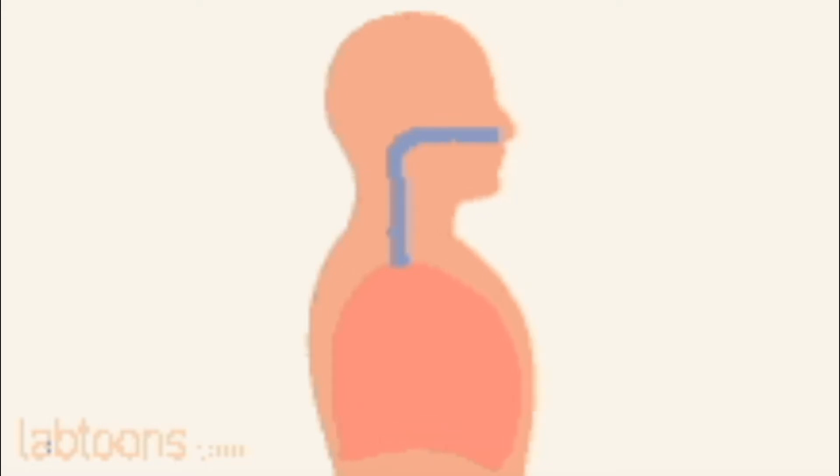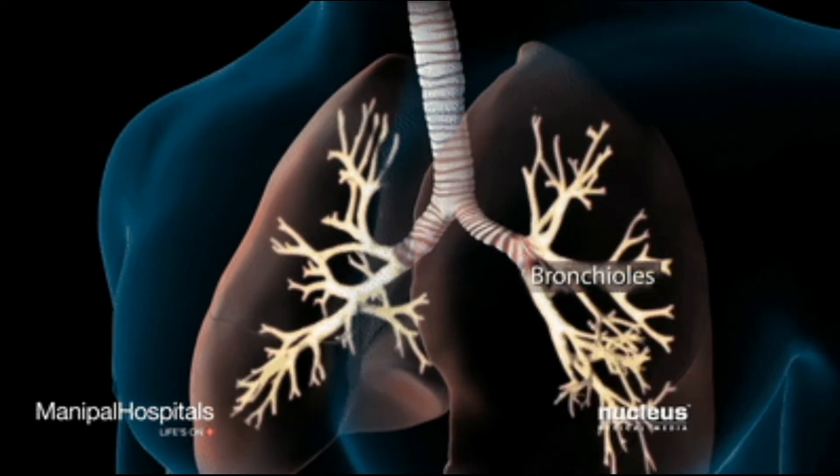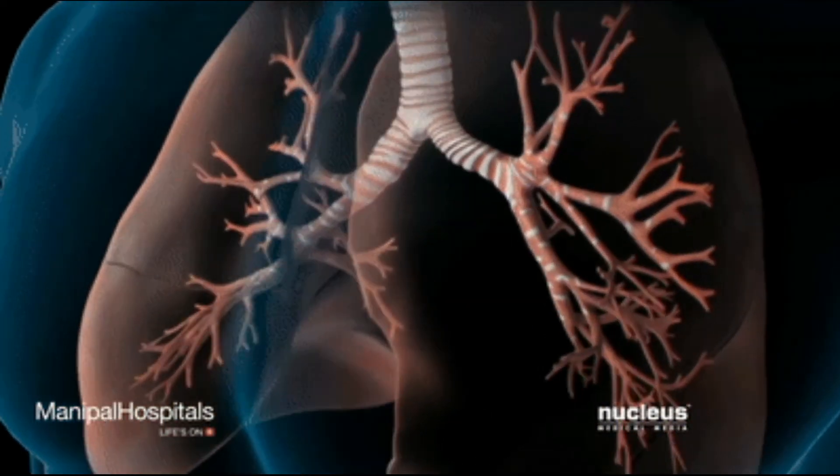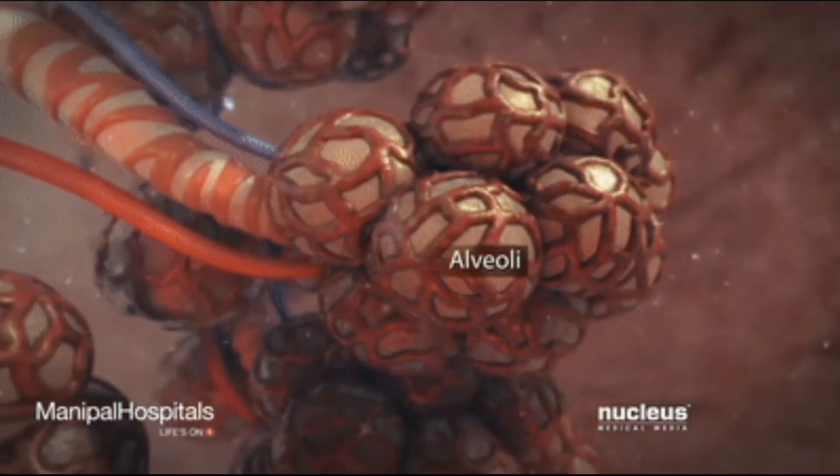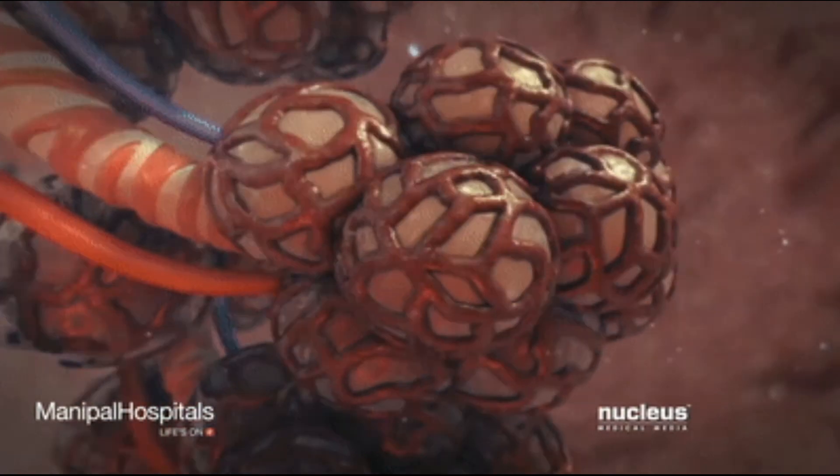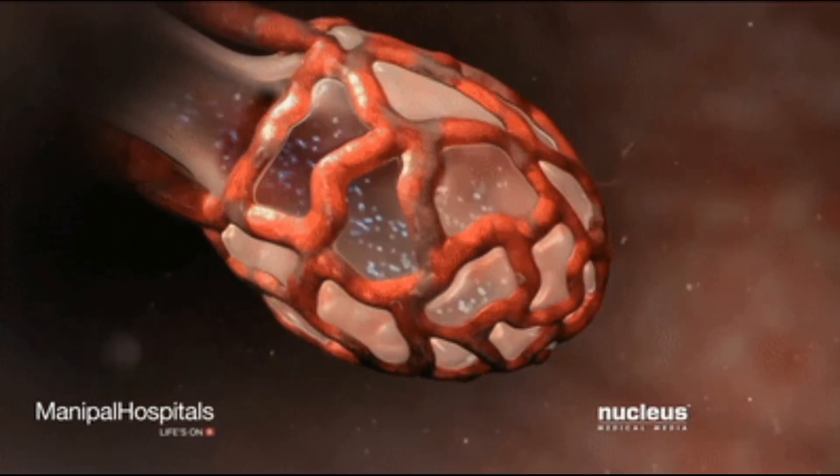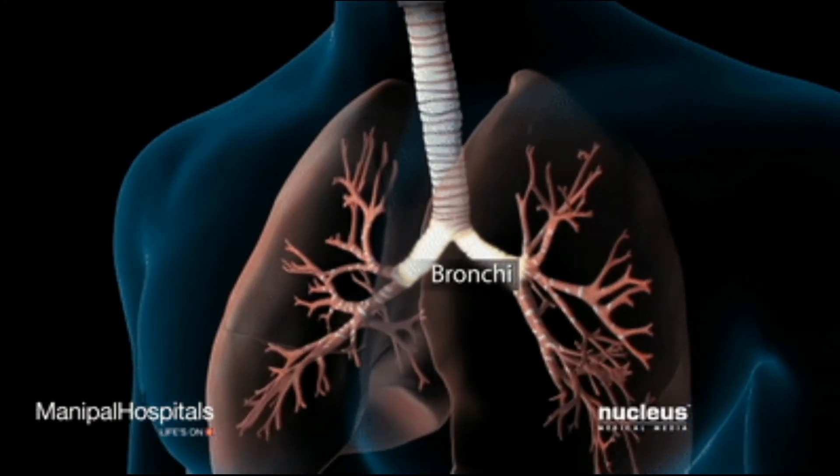Chemoreceptors are also located in the aortic bodies along the arc of the aorta. Their afferent fibers pass through the tenth cranial nerve, the vagus cranial nerve, and then to the dorsal respiratory group of neurons.